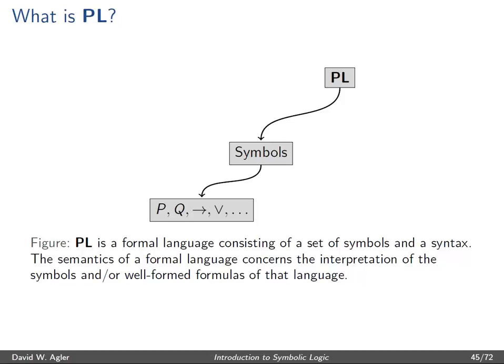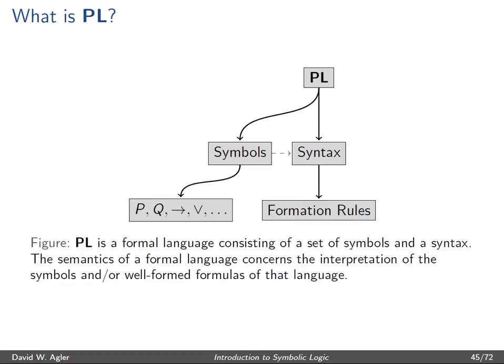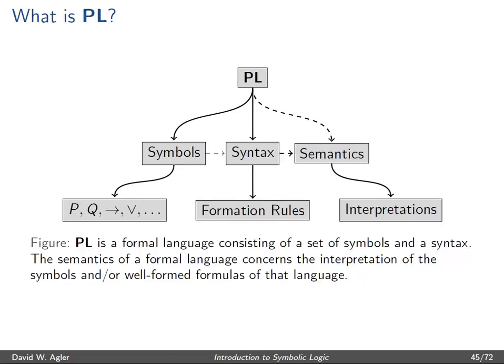Essentially, a formal language is a set of symbols, a syntax or rules for how these symbols can be put together, and a semantics — a set of rules for telling us what these symbols and their combinations mean. In terms of the language of propositional logic, interpretations assign truth values to propositional letters, and what are called valuations assign truth values to complex formations of these symbols.